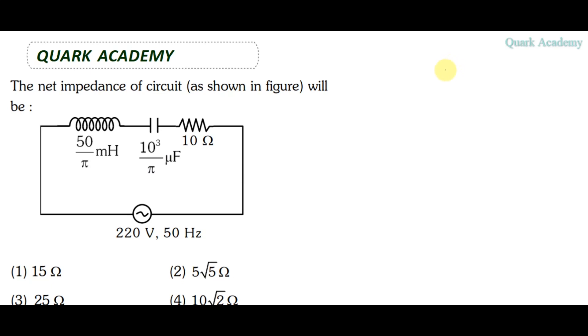To find the total impedance of the circuit shown in the figure, we have an inductor, capacitor, and resistor. The inductance L is 50 by π millihenry, the capacitance is 10³ by π microfarad, and the resistance is 10 ohm. In an RLC circuit, the impedance has a specific expression.